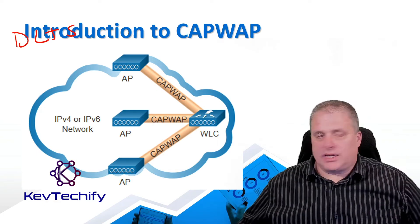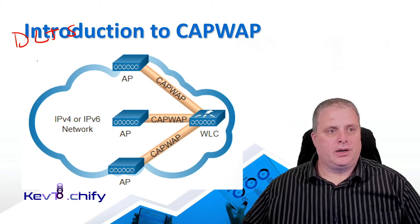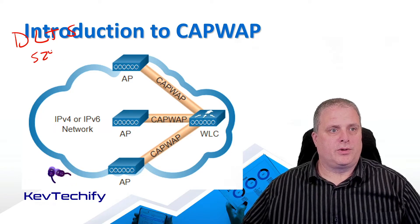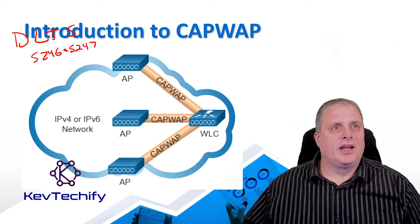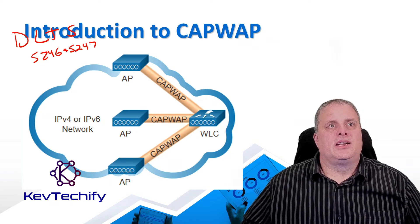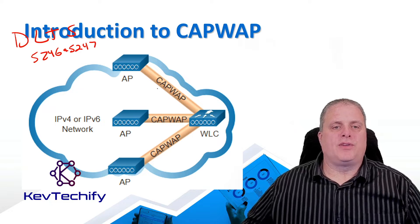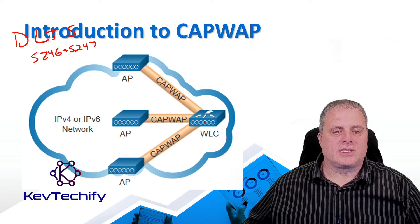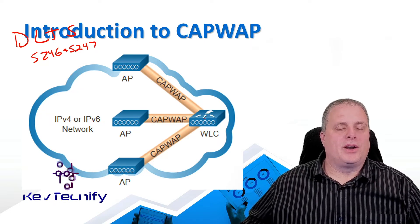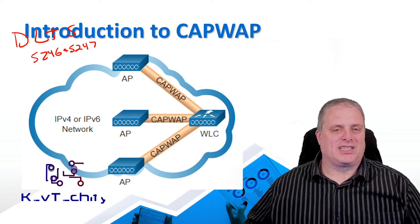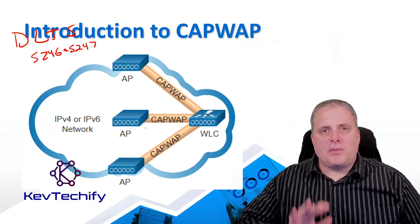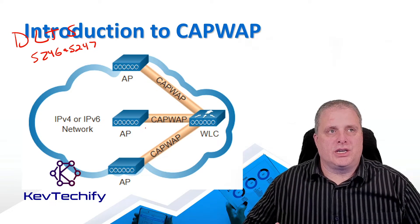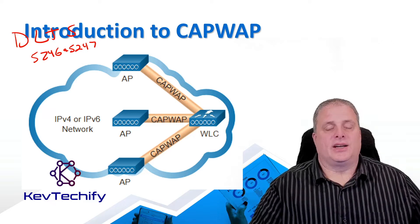We set aside UDP ports 5246 and 5247, which are used to encapsulate and forward traffic between the wireless LAN controller and your lightweight access points. You've got to make sure those ports are open on your network. CAPWAP operates over both IP version 4 and IP version 6 to send this data.